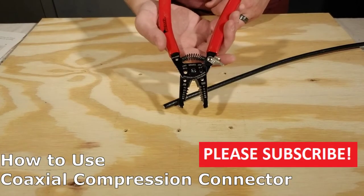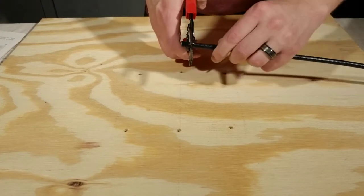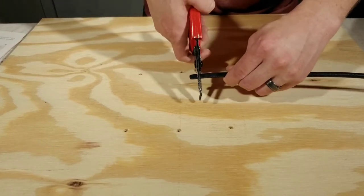This video will show you how to use a tool-less coaxial compression fitting. First thing you need to do is make a clean 90 degree cut on your coaxial cable.